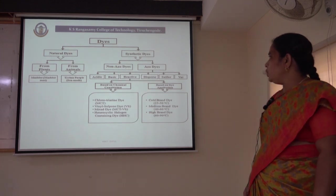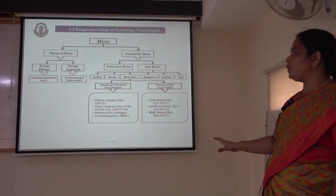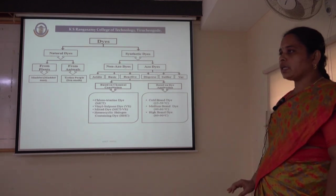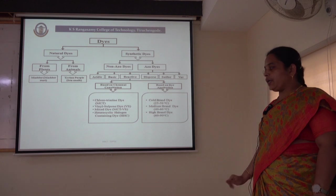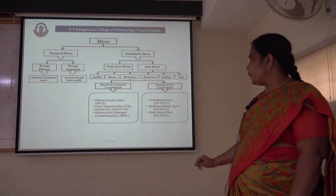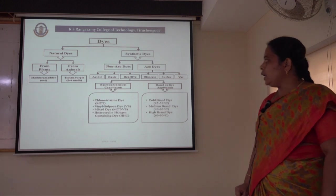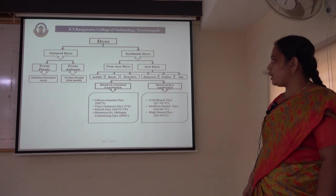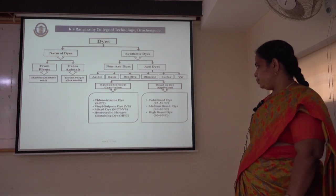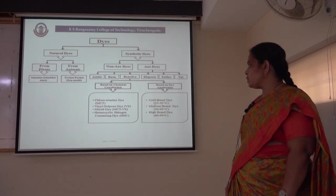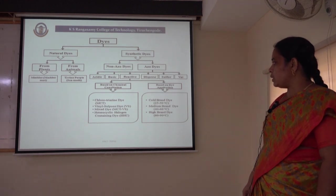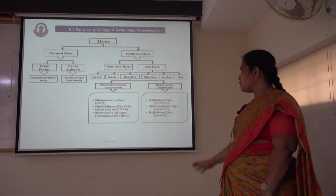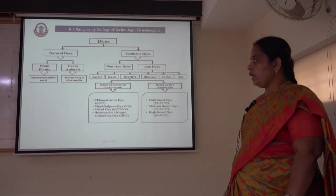Coming to the classification of reactive dyes especially — reactive dyes can further be classified based on their chemical constitution, that is the chemical structure of the dye, and based on the application process. Based on chemical constitution, reactive dyes include cold brand reactive dyes, vinyl sulphone dyes (Remazol dyes), mixed dyes (monochlorotriazine and vinyl sulphone), bifunctional reactive dyes, and heterocyclic halogen-containing dyes.